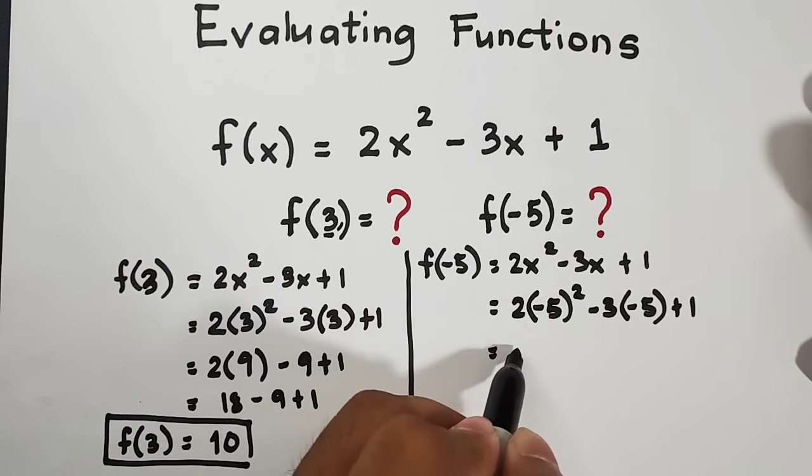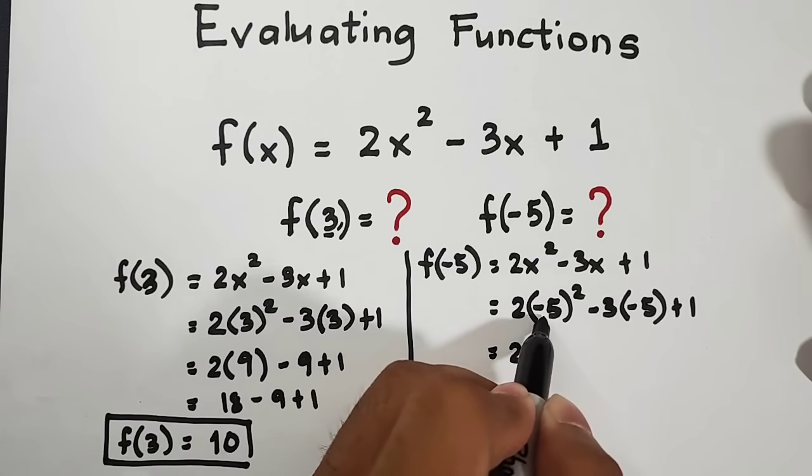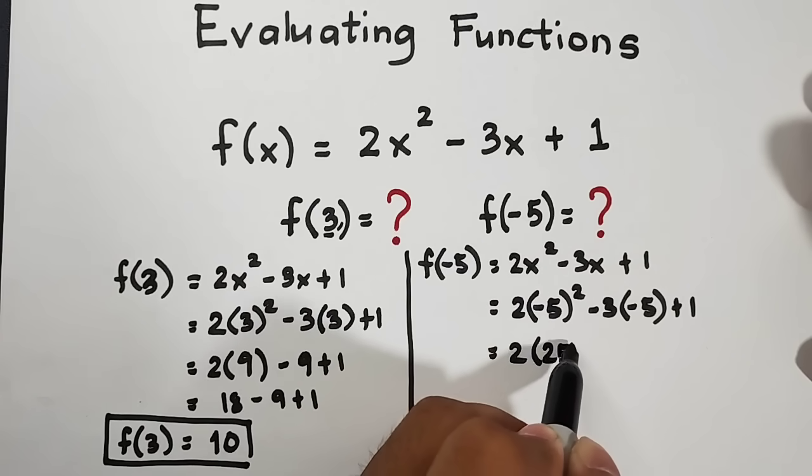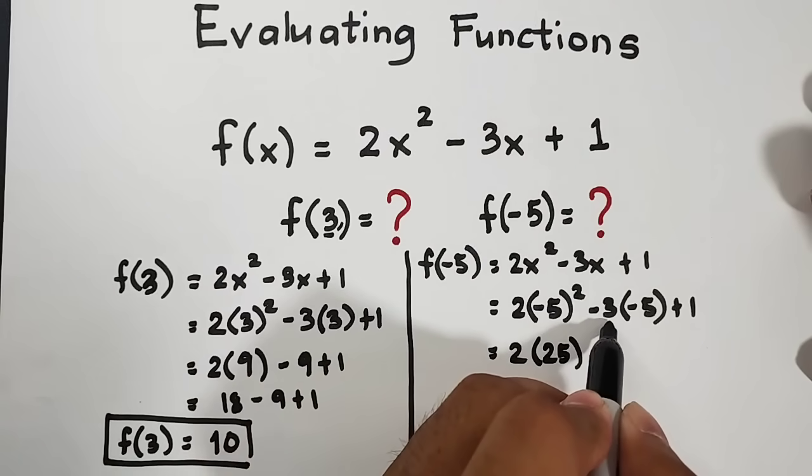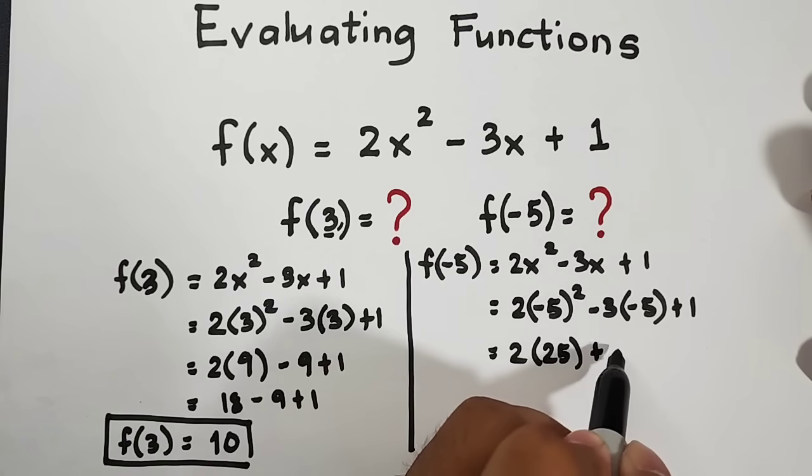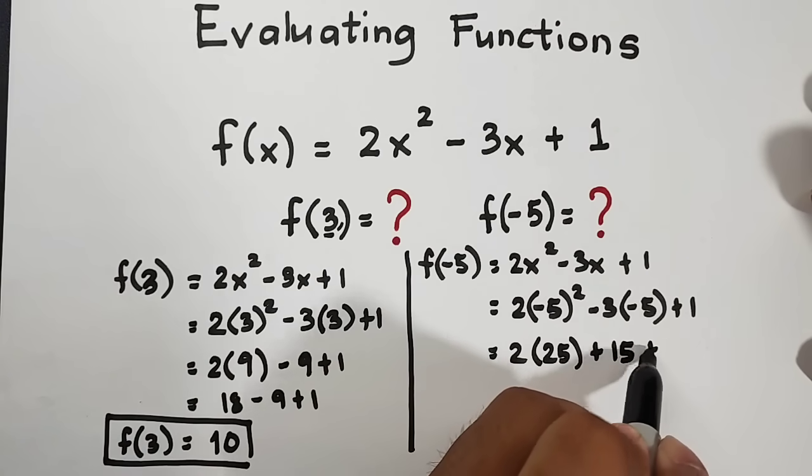So that is 2 times negative 5 squared minus 3 times negative 5 plus 1. Simplify. 2 times, negative 5 times negative 5 squared is equal to positive 25. Don't be confused with the exponent. The negative 3 times negative 5 is positive or plus 15 plus 1.